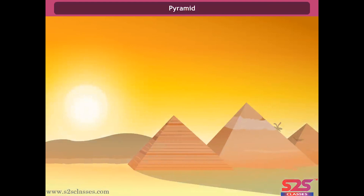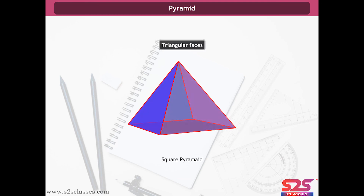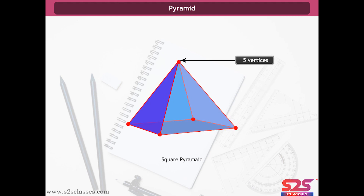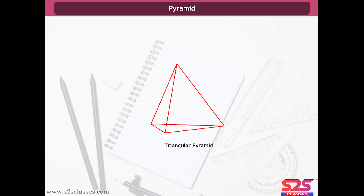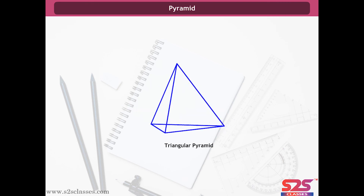Pyramid. Can you tell how a pyramid looks? Recall the pyramids of Egypt. A pyramid is a shape with a single base and the other faces are triangles. For example, a square pyramid has five faces: one square face as the base and four triangular faces. It has eight edges and five vertices. In a triangular pyramid, there are four triangular faces: one triangular base and three other triangular faces. It has six edges and four vertices.